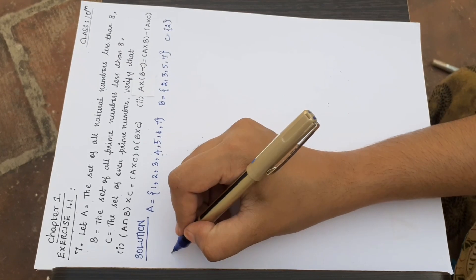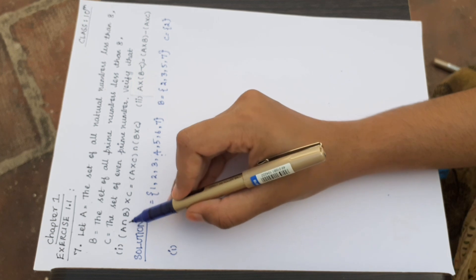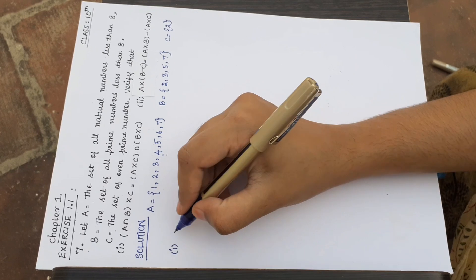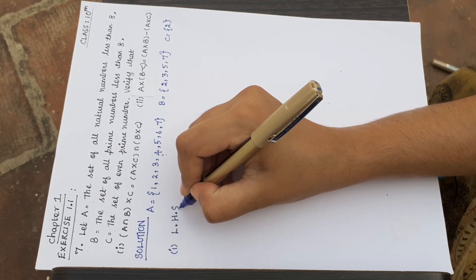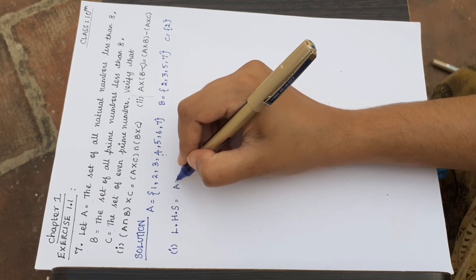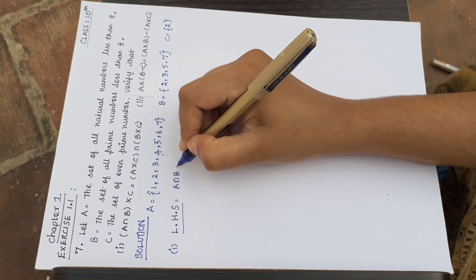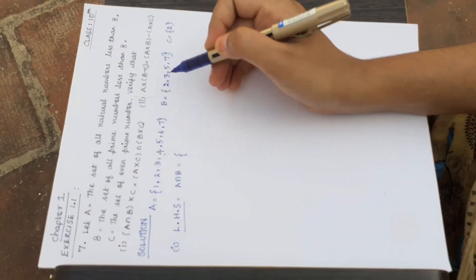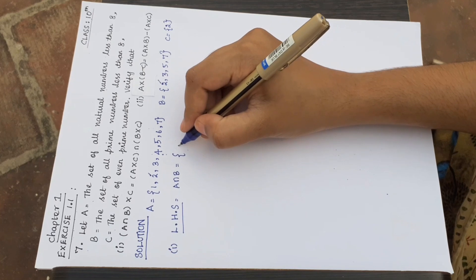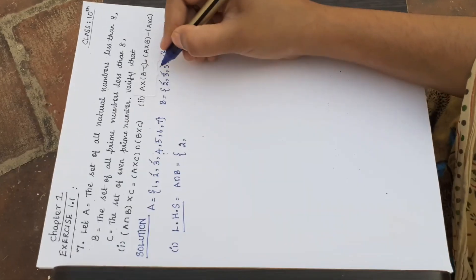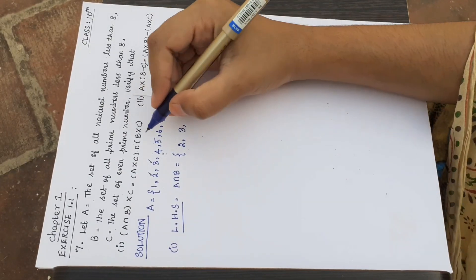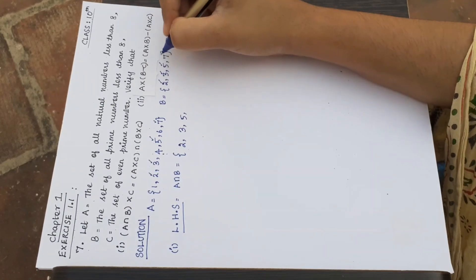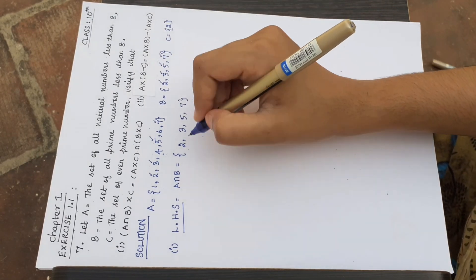Now first subdivision: A∩B × C = A×C ∩ B×C. We will first prove the left-hand side. On the left-hand side, we first find A∩B — the common elements in A and B. Both A and B contain 2, 3, 5, and 7. So A∩B = {2, 3, 5, 7}.